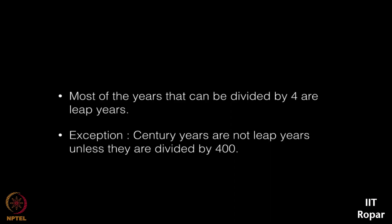That means if we have 1700, it is divided by four but it is not a leap year because this is a century year. But if we have 1600, it is divided by 400, so 1600 is a century year as well as a leap year. Most of the years that can be divided by four are leap years, but century years are not leap years unless they are divided by 400.